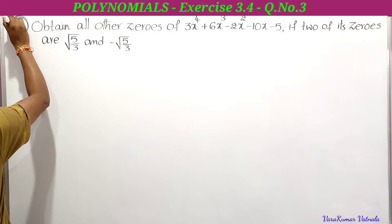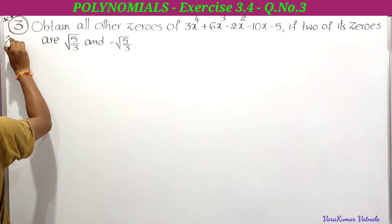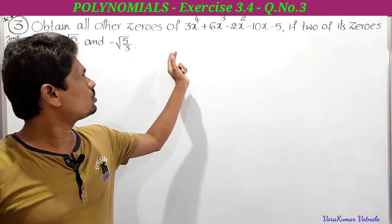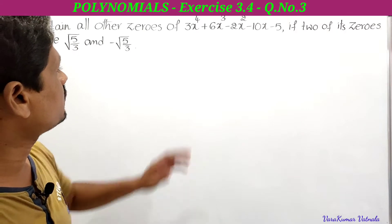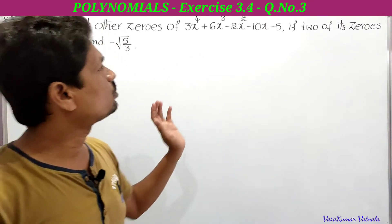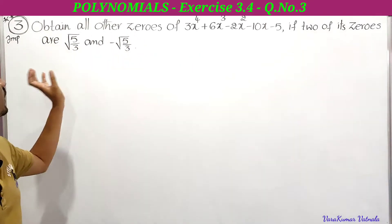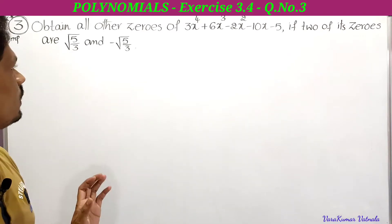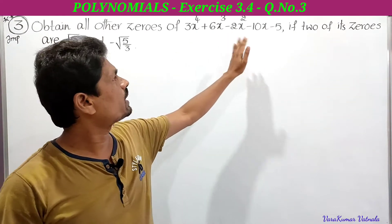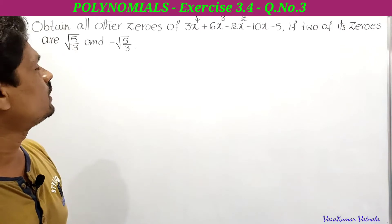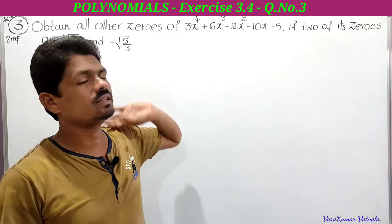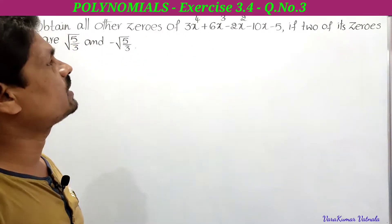The problem is: obtain all other zeros of 3x⁴ + 6x³ - 2x² - 10x - 5, if two of its zeros are √(5/3) and -√(5/3). So we are given a degree-4 polynomial and two of its zeros are √(5/3) and -√(5/3). We need to find the remaining zeros.